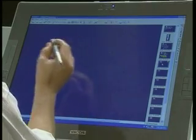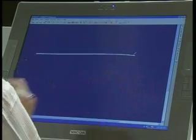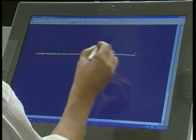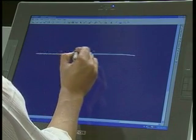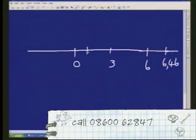When we're handling two inequalities, and we now need to combine the solution, we draw ourselves a number line. Let's put in the values which we believe are the critical values. 0 is a critical value. 6 is a critical value. 3 is a critical value. 6.46 was a critical value. 1 was a critical value, and minus 0.46 was a critical value.